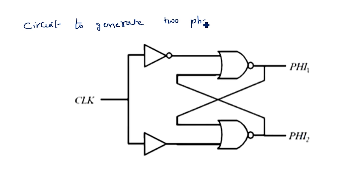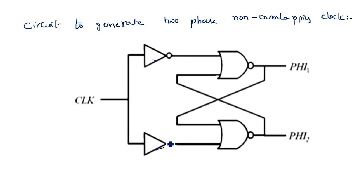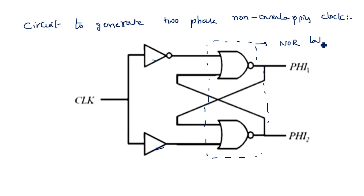The circuit used to generate the two-phase non-overlapping clock uses an inverter, a buffer, and a NOR latch. The true clock appears at one output and the complemented form at the input of the second NOR gate. This is a NOR latch — two NOR gates connected in a back-to-back conventional fashion — which generates the two non-overlapping phases.